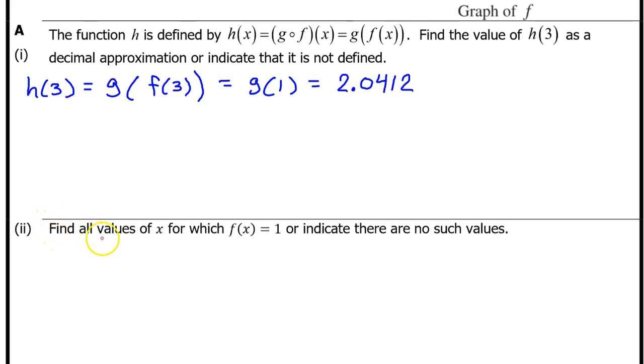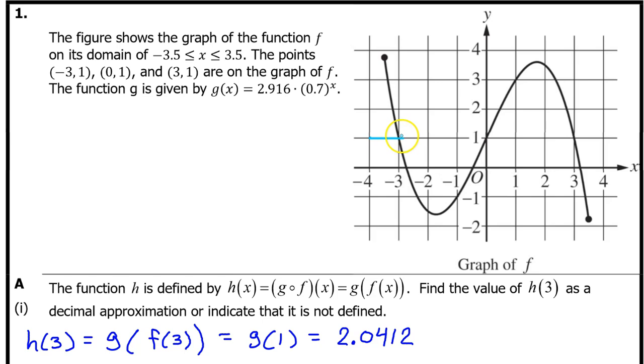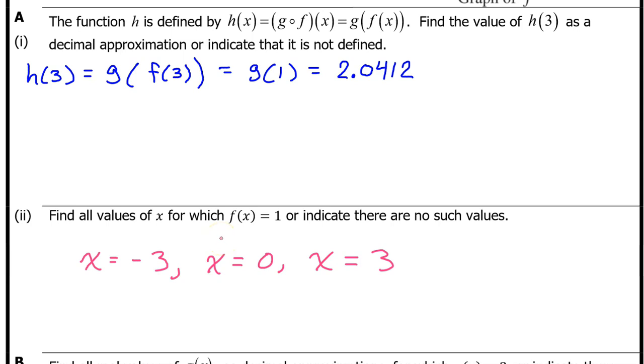A part 2. Find all values of x for which f of x is equal to 1 or indicate that there are no such values. This line shows where the output values are equal to 1. We can see that f of x is equal to 1 here, here, and here. So that's at negative 3, 0, and positive 3. That's it for A part 2.